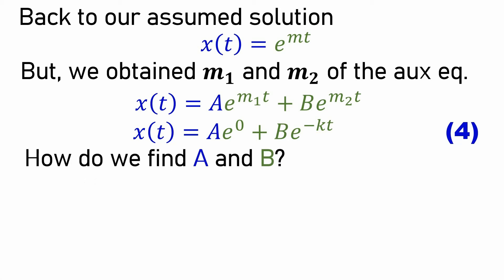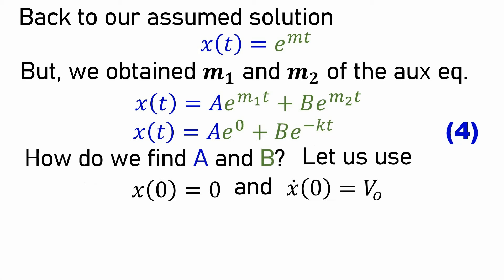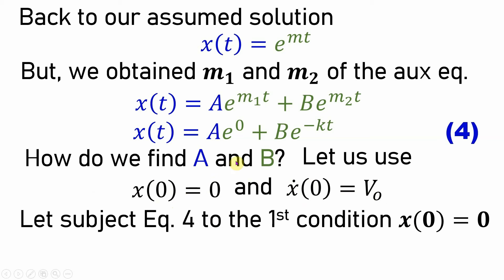Now, how do we find the constants A and B? We use the initial conditions: at time t = 0, the displacement of the object is zero, x(0) = 0. Also, we throw the object horizontally with initial speed v₀, so the velocity at t = 0 is x'(0) = v₀. We will use these two conditions to find A and B.